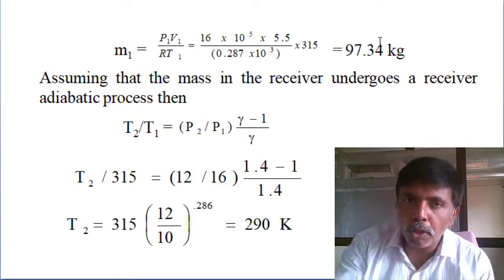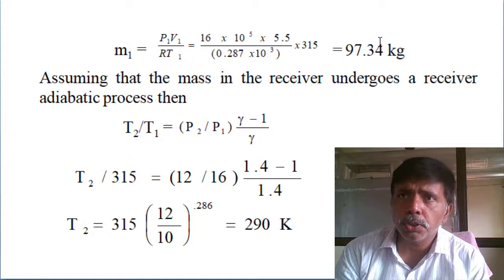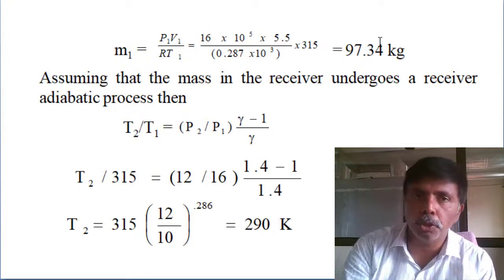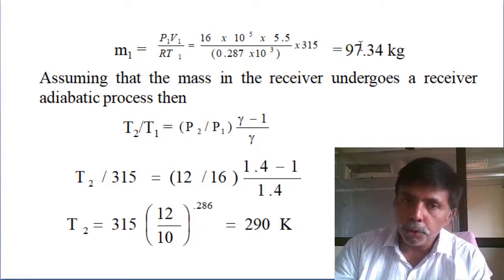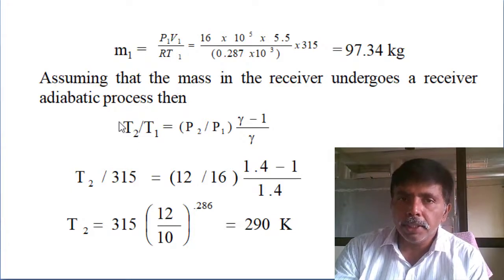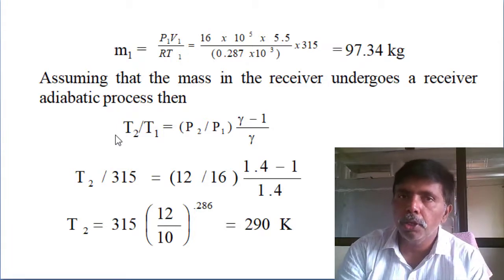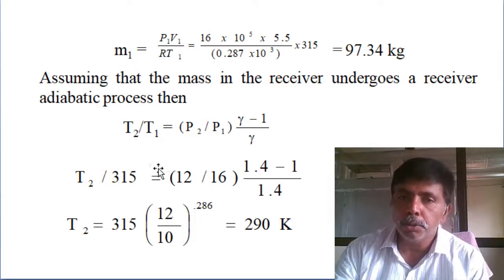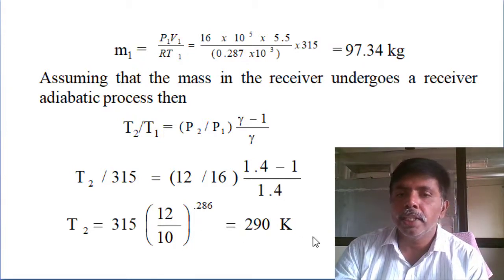At 12 bar, since the valve was opened for a short duration, we can assume the process is adiabatic — no heat loss. For an adiabatic process, T2/T1 = (P2/P1)^((γ-1)/γ). Using γ = 1.4 for air, T2 = 290 K.